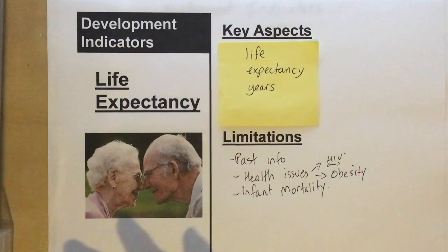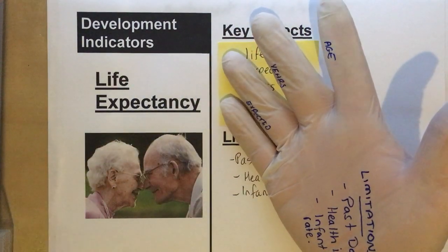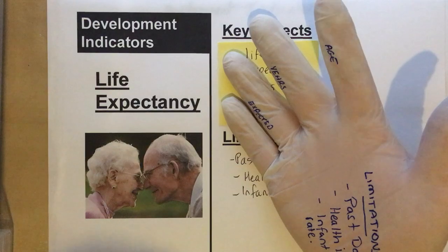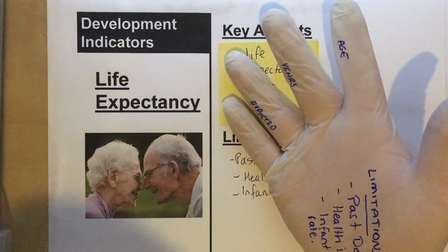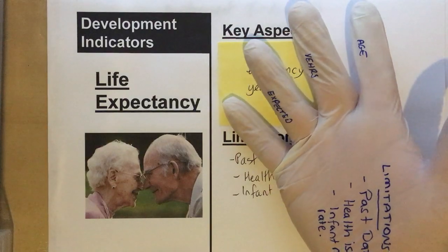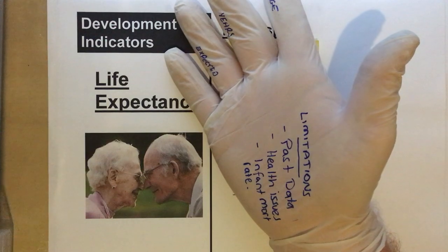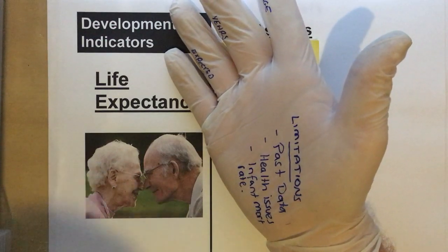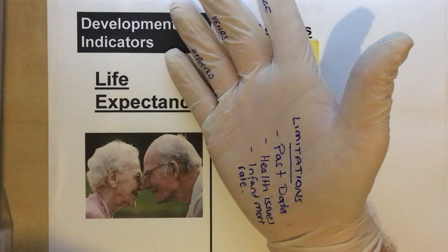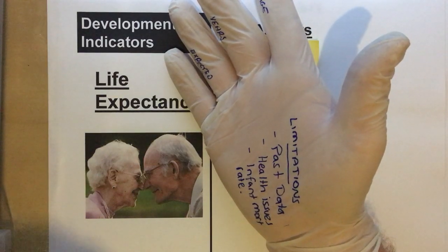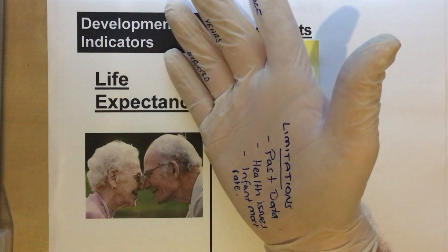Here's some of the key information. Life expectancy is an estimate of the age that somebody is expected to survive to, and it's measured in years. Some of the limitations are that it's based on past data, it doesn't take into account health issues that might arise in the future, and infant mortality may affect the averages.